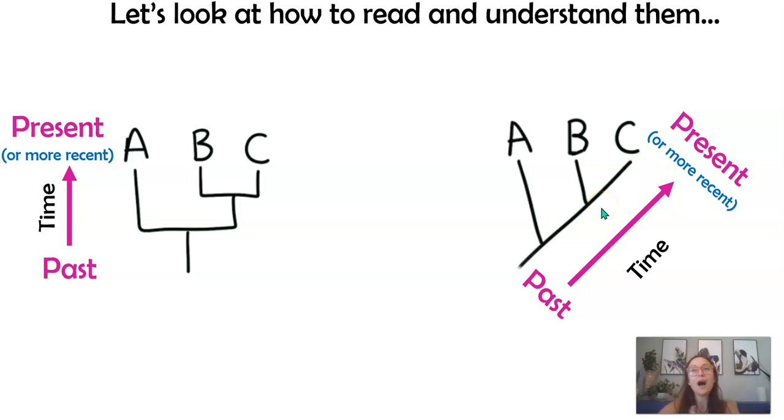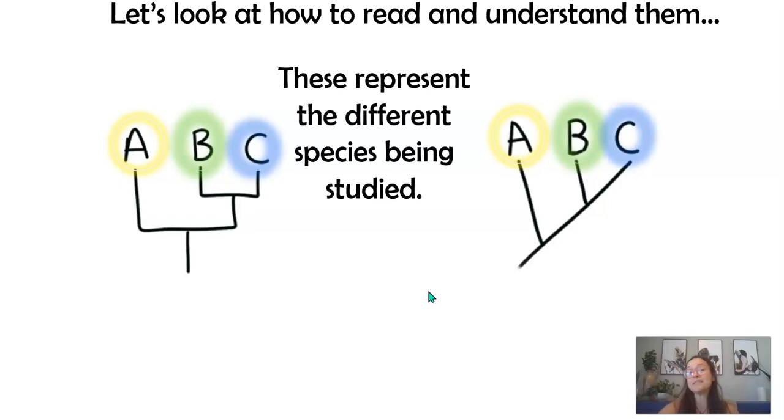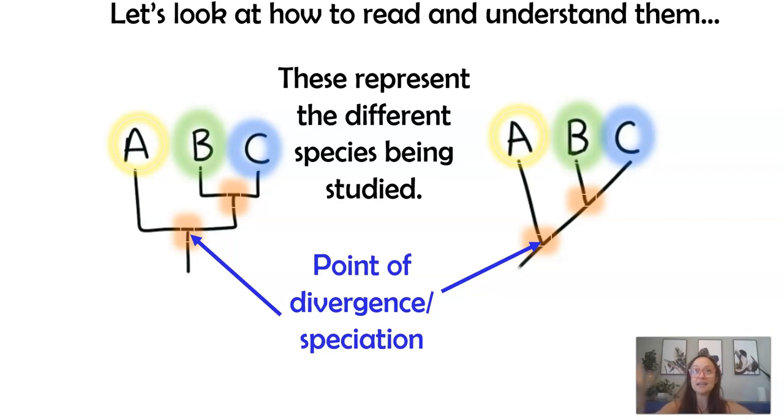We want to keep in mind that these lines represent time. Time could be hundreds of thousands of years. It could be millions of years. So it depends on the scale of what the organisms are that you're studying. When we look at these trees, these different letters at the top represent the different species being studied. These orange highlighted areas, these branch points, represent times in history, evolutionary history, where speciation occurred.